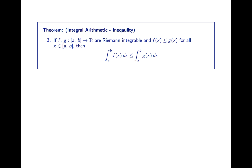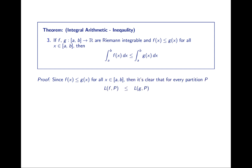Integral arithmetic inequality result: if f is less than or equal to g for all values of x, then the integral of f is less than or equal to the integral of g. Since f ≤ g, for any partition the lower sums of f are less than or equal to the lower sums of g for the same partition, because the heights of the rectangles of f are less than or equal to those of g. If that's true for every partition, it must be true for the supremum over all partitions. Since f and g are both integrable, the supremum of all lower sums equals their respective integrals, and we have our result.